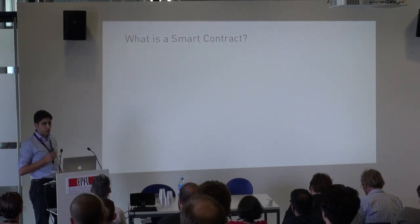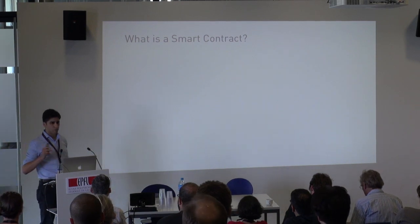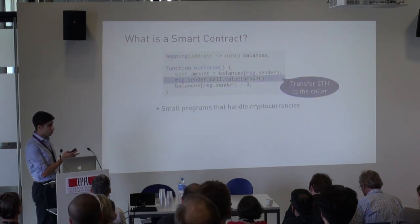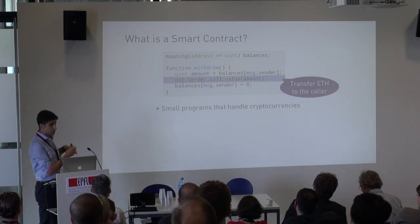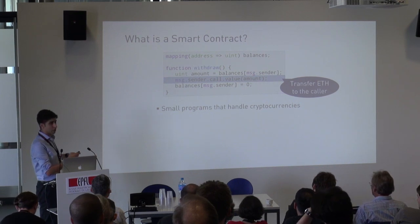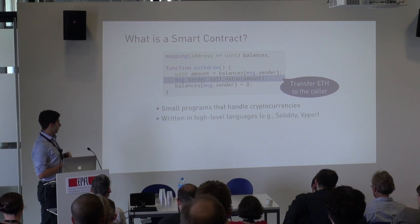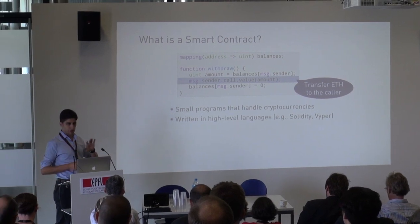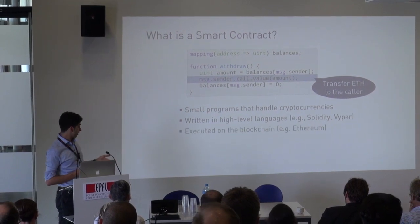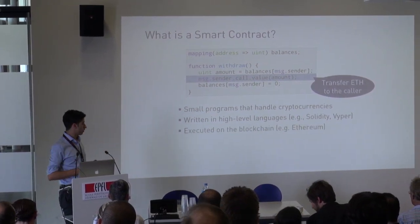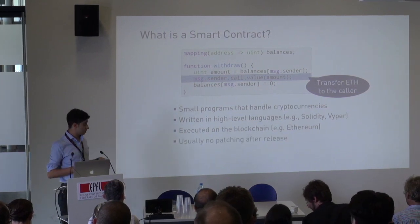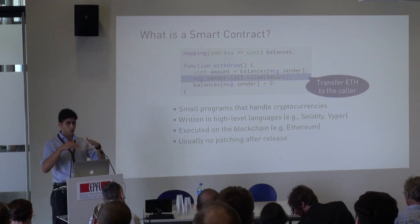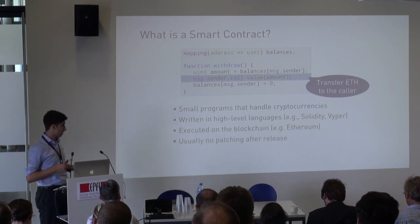Smart contracts are small programs that handle cryptocurrencies. In Ethereum, there are special instructions that allow you to send ether from one contract to another. They're typically written in high-level languages that appear similar to normal programming languages but behave quite differently because of how they're executed — directly on the blockchain. There's typically no patching after deployment, so if you want to update the code, you have to encode that update logic in the contract itself.